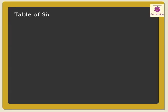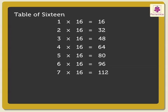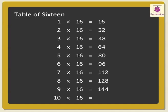Let us begin with the table of 16: 1×16 is 16, 2×16s are 32, 3×16s are 48, 4×16s are 64, 5×16s are 80, 6×16s are 96, 7×16s are 112, 8×16s are 128, 9×16s are 144, 10×16s are 160.